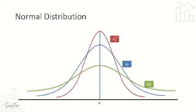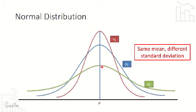So dun sa maroon curve, 5'4 ang mean and then yung iba 5'5 or 5'3 and a half — magkakalapit. So what we're showing here is same mean but different standard deviation, kaya magkakaiba yung sukat ng graph natin.